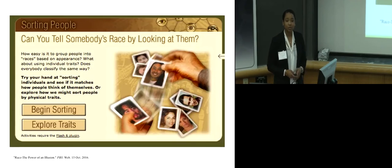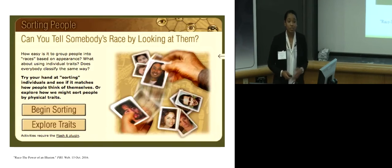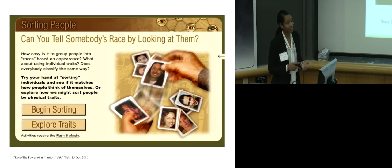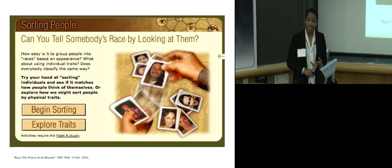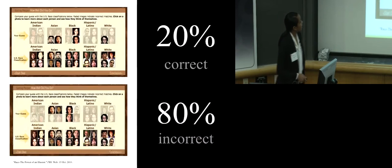It's a sorting activity facilitated by PBS. You're welcome to go online and try it. It implores users to try their hand at sorting photographs of individuals into the appropriate racial categories, and those racial categories included in the activity are those commonly seen on US census documents - components of our everyday American life. Those racial categories are black, white, Hispanic, Latino, American Indian, and Asian. I asked two of my Cornell colleagues, one international student and one student from the United States, to participate in this activity for me.